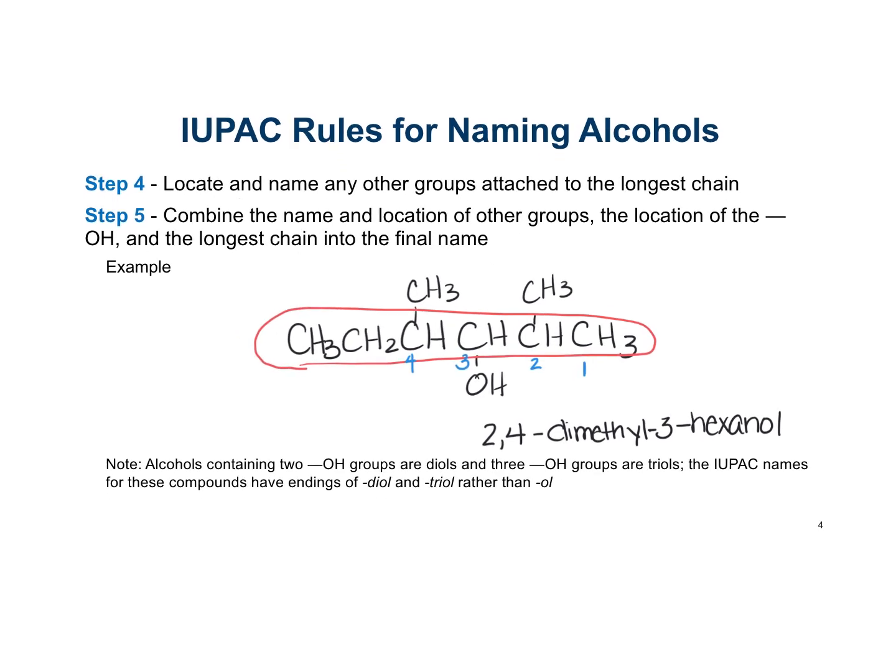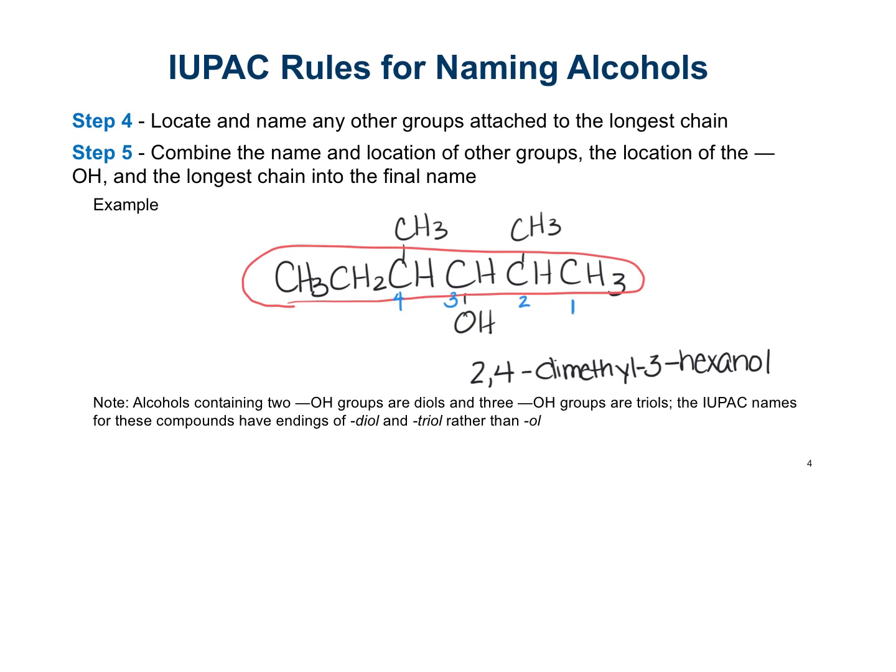We've combined the name and location of the other groups, the location of the OH, and the longest chain to give us the final name. If you have an alcohol with two OH groups, these are called diols, and three OH groups are called triols, using diol and triol rather than just OL.